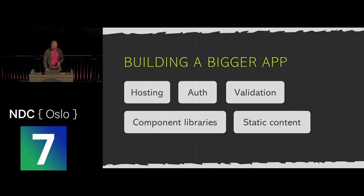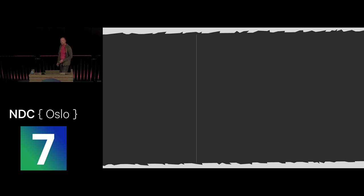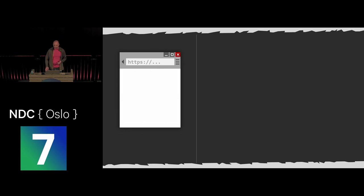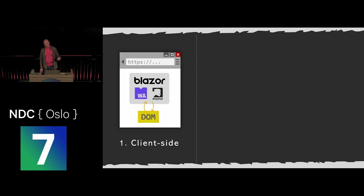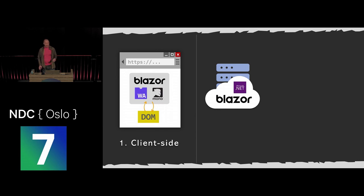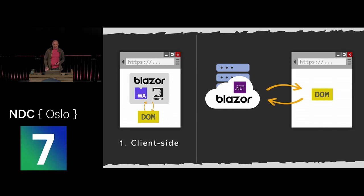Now let's look at the broader picture — there's much more to Blazor than what I've shown. So far I've only shown client-side Blazor: running on WebAssembly inside the browser, interacting with the DOM directly. But this architecture is flexible. We can also run the .NET/Blazor part on a server and push UI updates over a WebSocket/SignalR connection to the browser — this is called server-side Blazor.